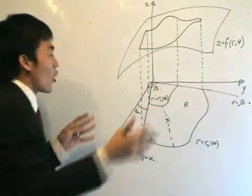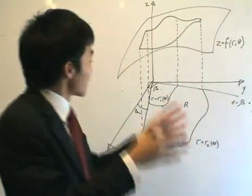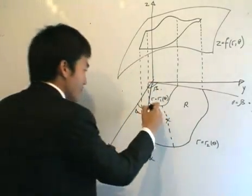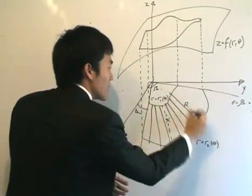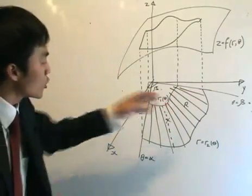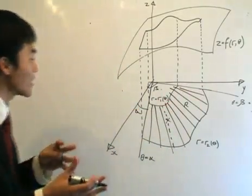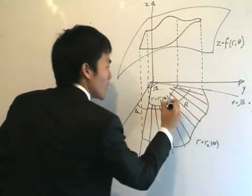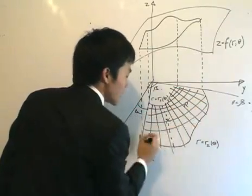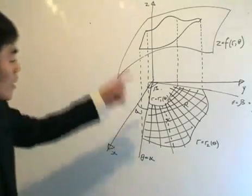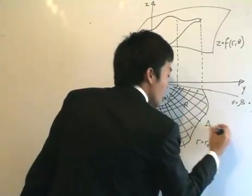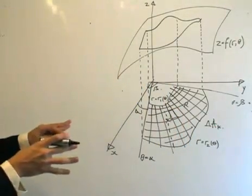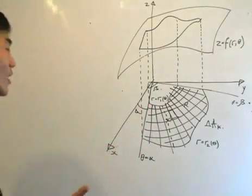Instead of using lines parallel to the coordinate axes, we now use circular arcs and rays parallel to the angle theta to subdivide the region. This divides region R into small polar sub-rectangles, consistent with the polar coordinate system. We then define a small area element as delta A_k — it has a curved shape rather than a rectangle, but that's the region we're concerned with. We pick a point (R_k*, theta_k*) inside each sub-rectangle.